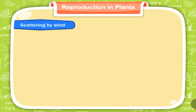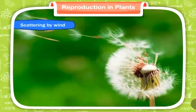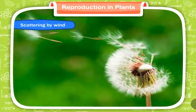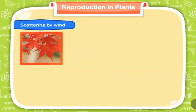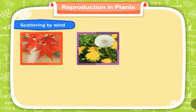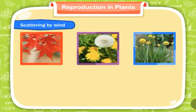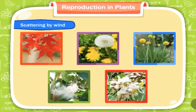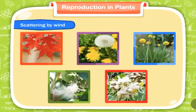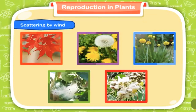Scattering by wind. Some seeds have long and fine hair on them. Seeds like maple, dandelion, drumstick, maydar, and hiptage have wings or tufts of hair on them. These hair or wings help them to float in the wind.